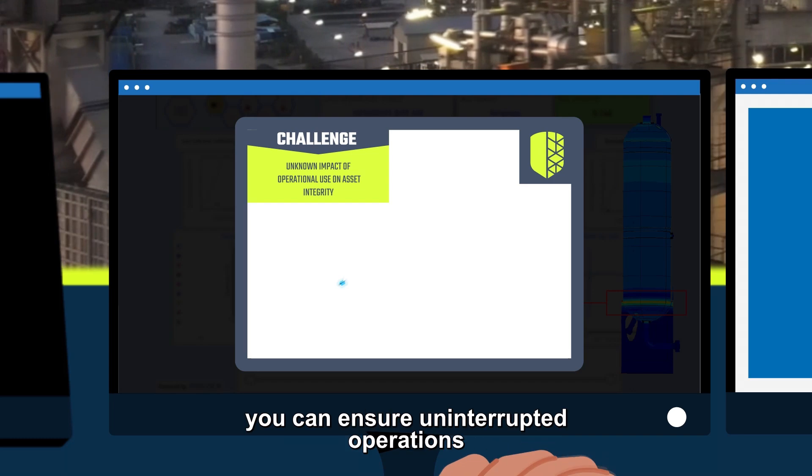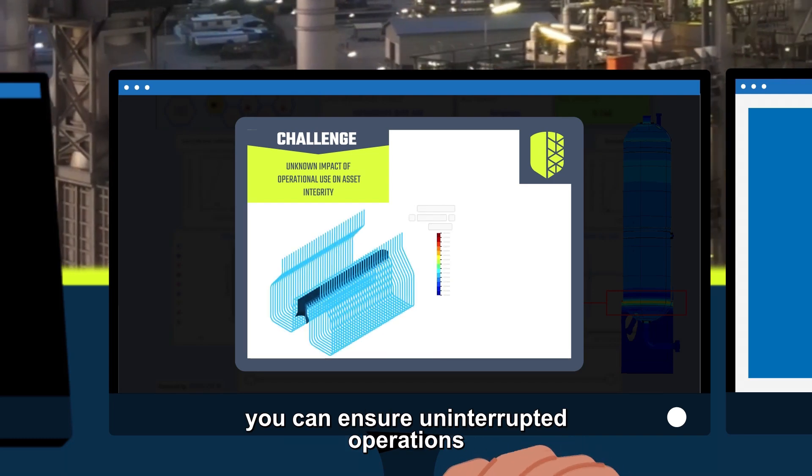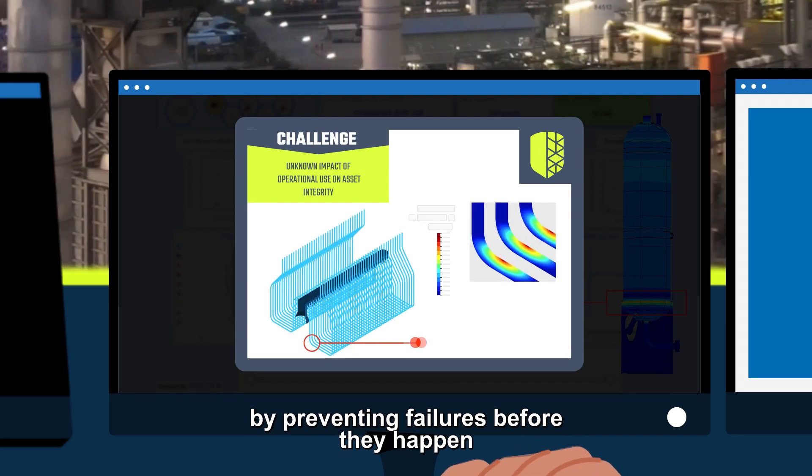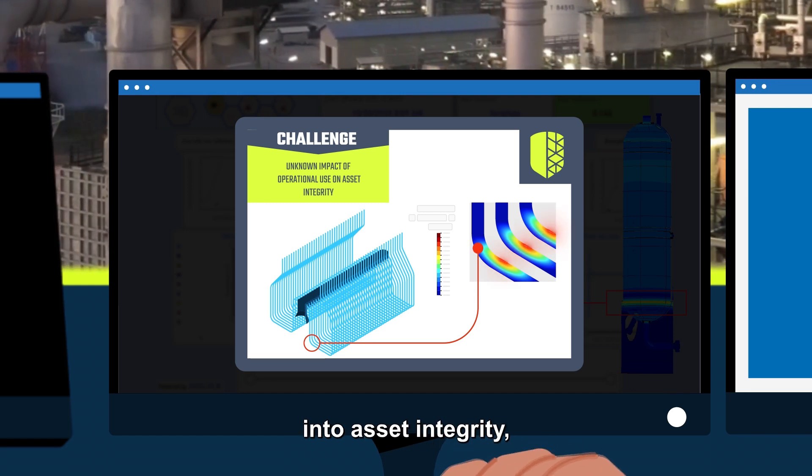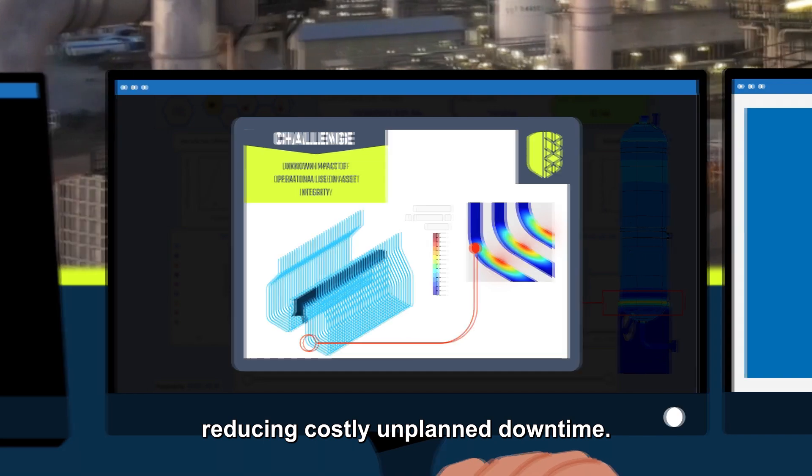As a maintenance engineer, you can ensure uninterrupted operations by preventing failures before they happen and streamline inspections with real-time insights into asset integrity, reducing costly unplanned downtime.